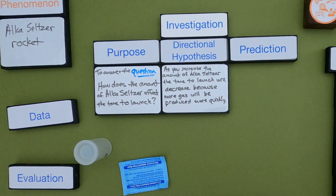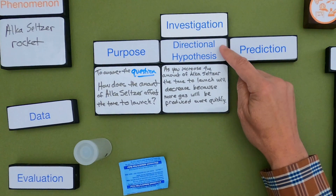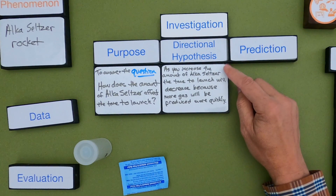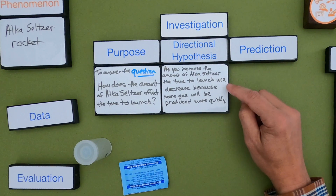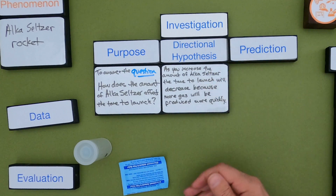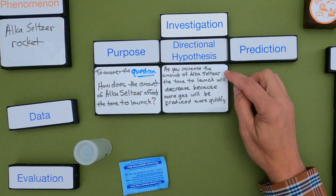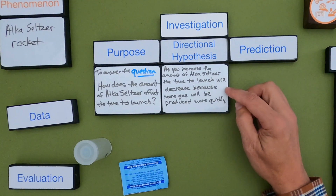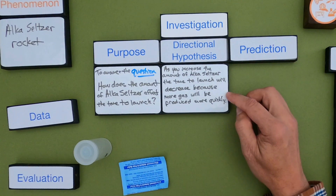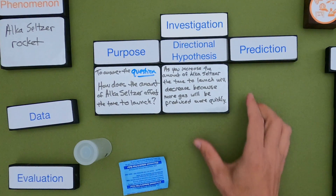For my directional hypothesis, the first thing you want is a direction or a guess. I said: as you increase the amount of Alka-Seltzer, the time to launch will decrease. A directional hypothesis means you're changing something which will cause something else to occur. But that's only half of a good hypothesis — the second part is the reason: more gas will be produced more quickly. That's my explanation, and a good hypothesis should always include your model for how you think the thing works.